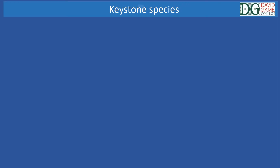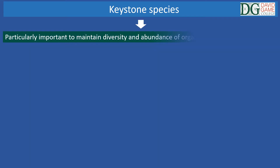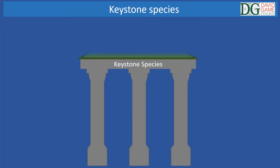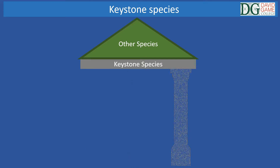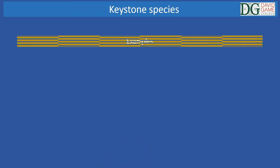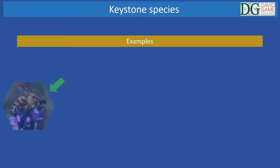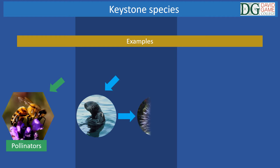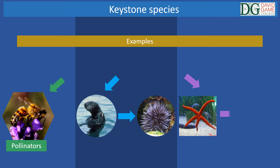There are some species called keystone species, which are particularly important to maintain the diversity and abundance of organisms within an ecosystem. The absence of keystone species would start a domino effect in an environment, as other species would start to disappear. For example, bees are extremely important for many species because they are pollinators. Sea otters keep the number of sea urchins in check, preventing them from destroying kelp forests. Sea stars keep the population of mussels in check.